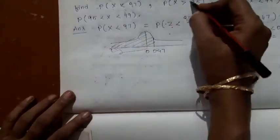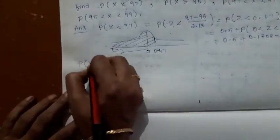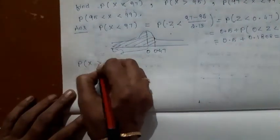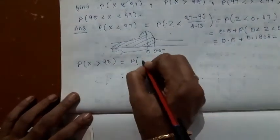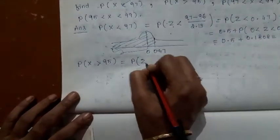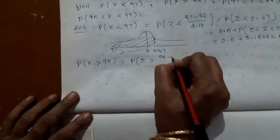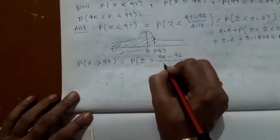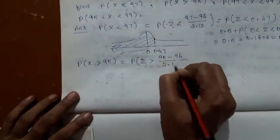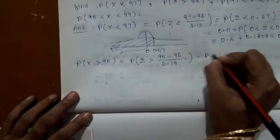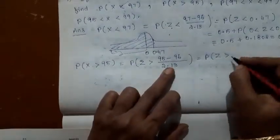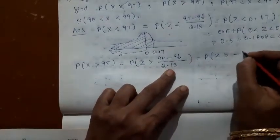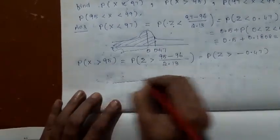The first problem is over. Let me come to the second problem: probability of X greater than 95. That is probability of Z greater than (95 minus mu 96) divided by sigma 2.13, which is probability of Z greater than minus 1 divided by 2.13, which equals minus 0.47.